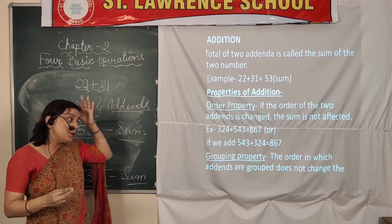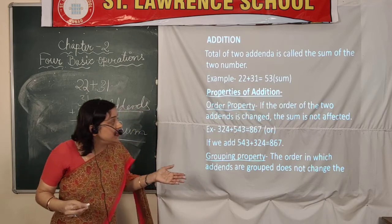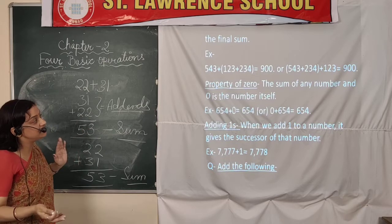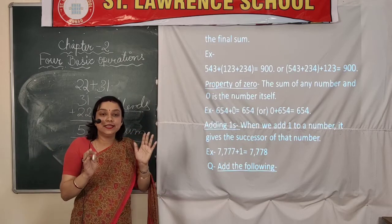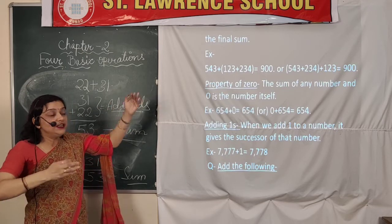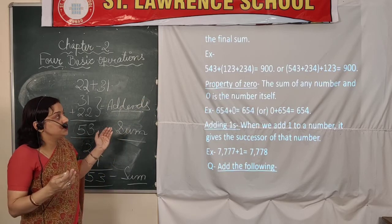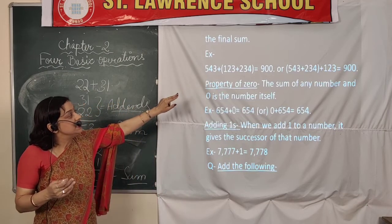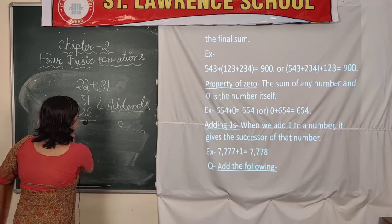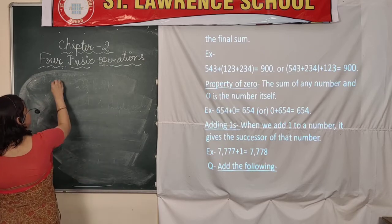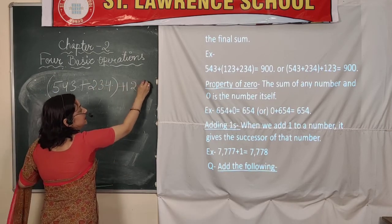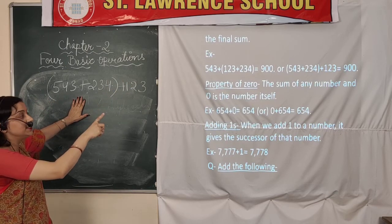The second property is the grouping property: the order in which addends are grouped does not change the final sum. Even if we change which two numbers we group together in brackets, the sum won't change. For example, taking 543 plus 123 plus 234 — whether we group the first two or the last two together, the answer will remain the same.